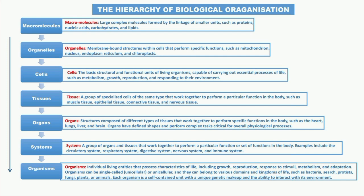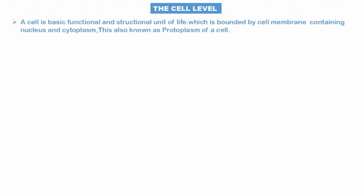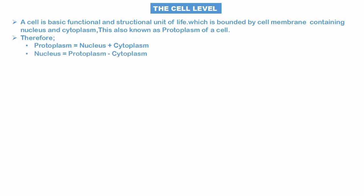Starting with the cell level: the cell is the structural and functional unit of life, bounded by a cell membrane and containing a nucleus and cytoplasm. This living content is also known as the protoplasm. Therefore: protoplasm equals nucleus plus cytoplasm; nucleus equals protoplasm minus cytoplasm; cytoplasm equals protoplasm minus nucleus.